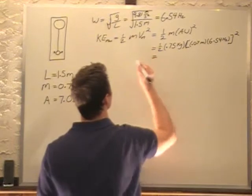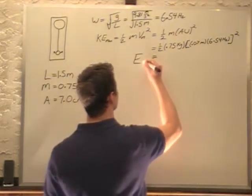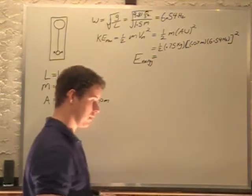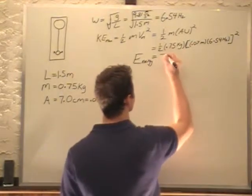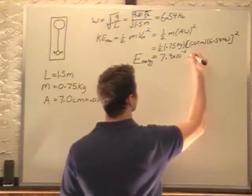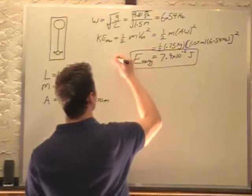And that gives us max kinetic energy, which is just going to be our total energy. After plugging that in, we get 7.9 times 10 to the minus 2 joules. So this is our answer for part A.